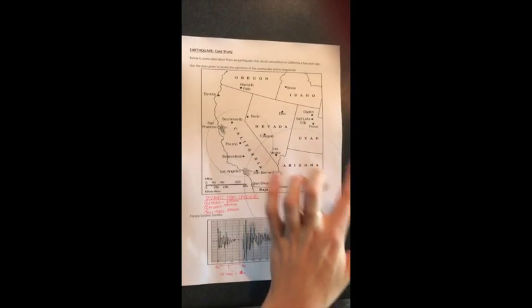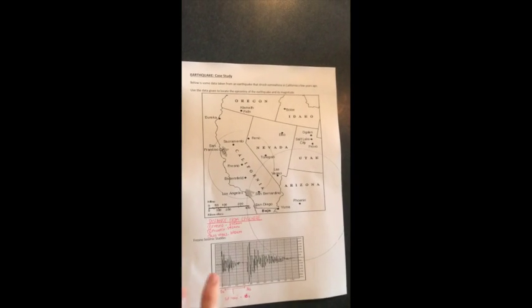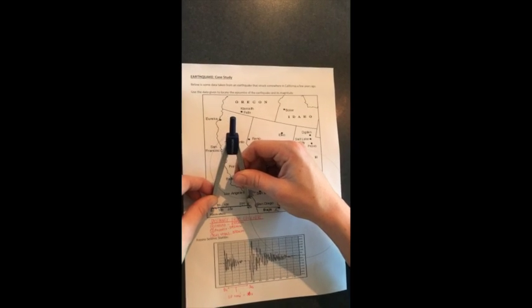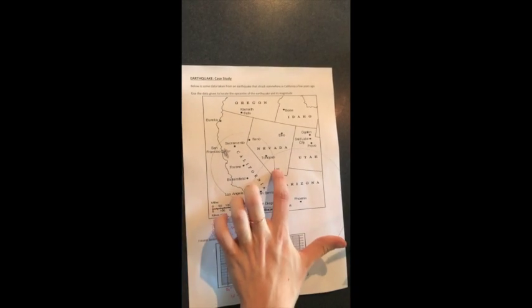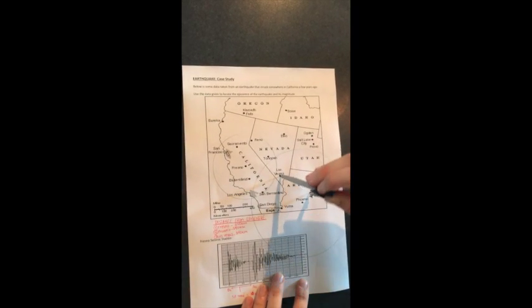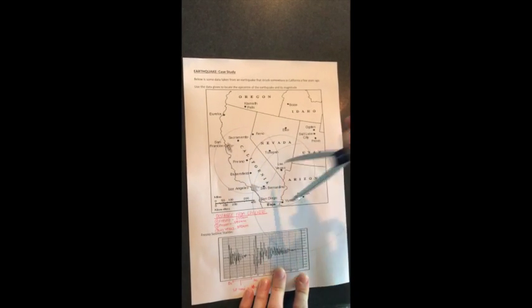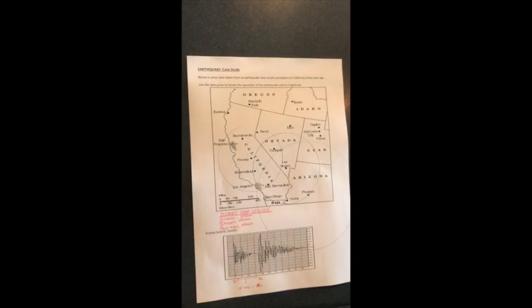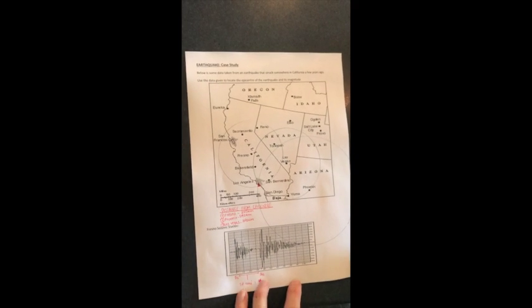It doesn't matter that this has come off the page because we're only really looking at the points on the map where the circles intersect. Las Vegas is 390 kilometres. Find Las Vegas on the map and draw the third circle. When looking at this, I can see that there is a distinct location on the map where the three circles intersect — it's this little section here. It's the only point where all three circles intersect.